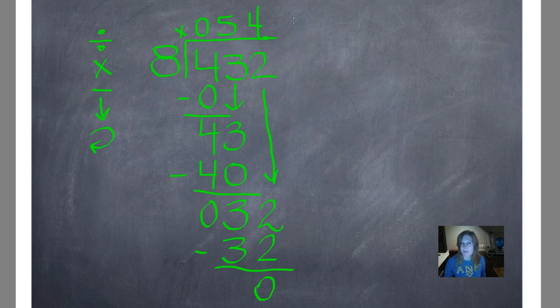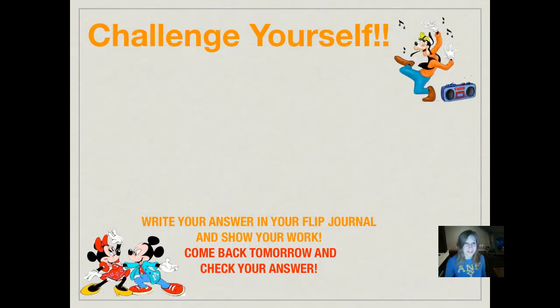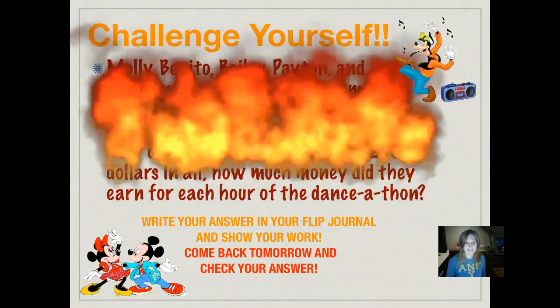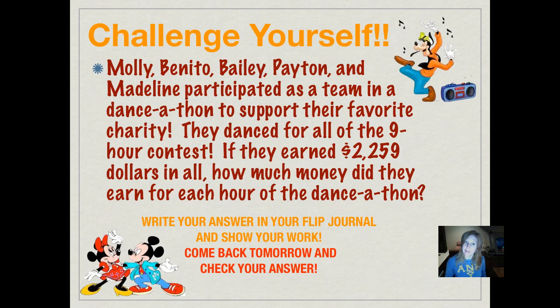I have zero remainders here, so I don't write anything up here because you don't write if you have nothing left over. I wouldn't say, for dinner, I had 5 hot dogs and nothing left over. We just say, I had 5 hot dogs. So let's check it over here. 54 times 8 because we're multiplying the numbers outside the house.